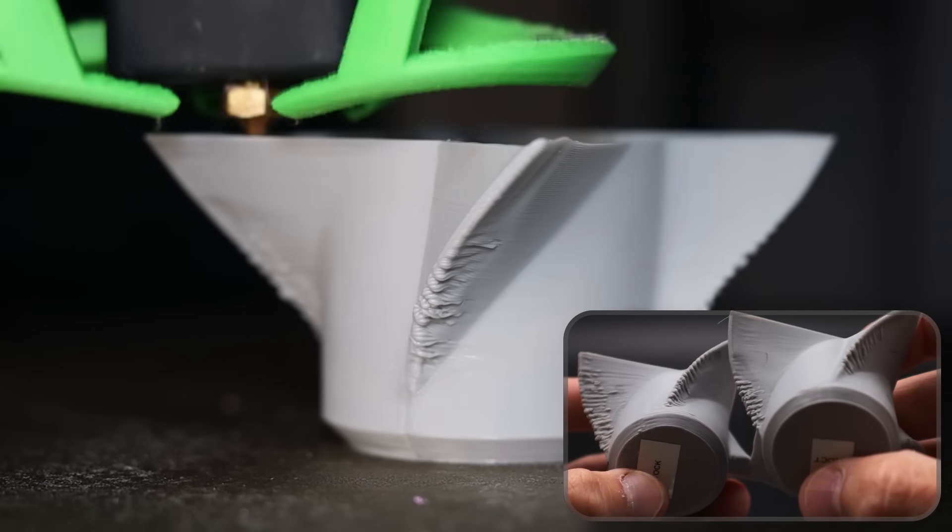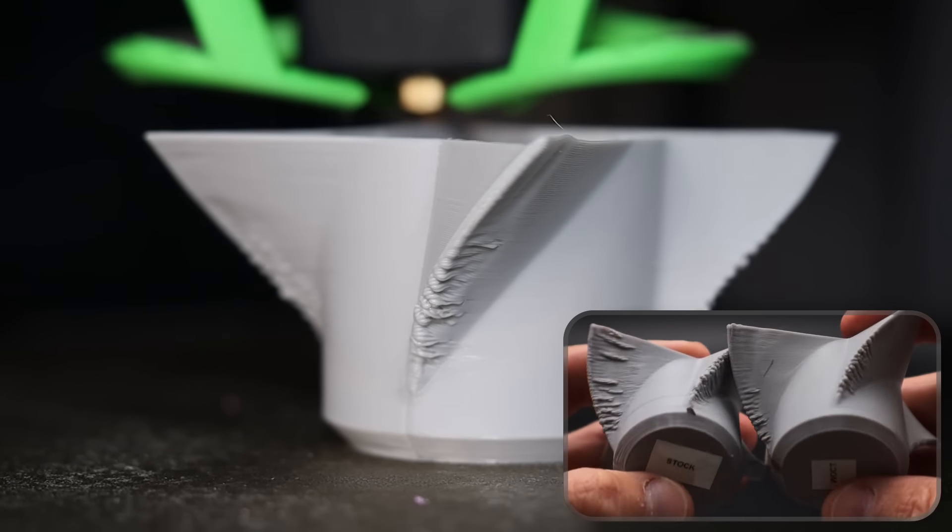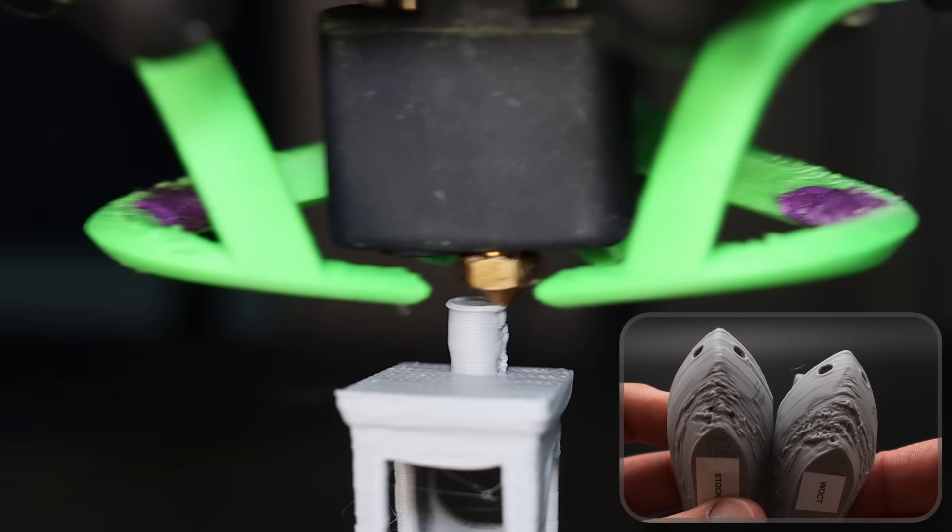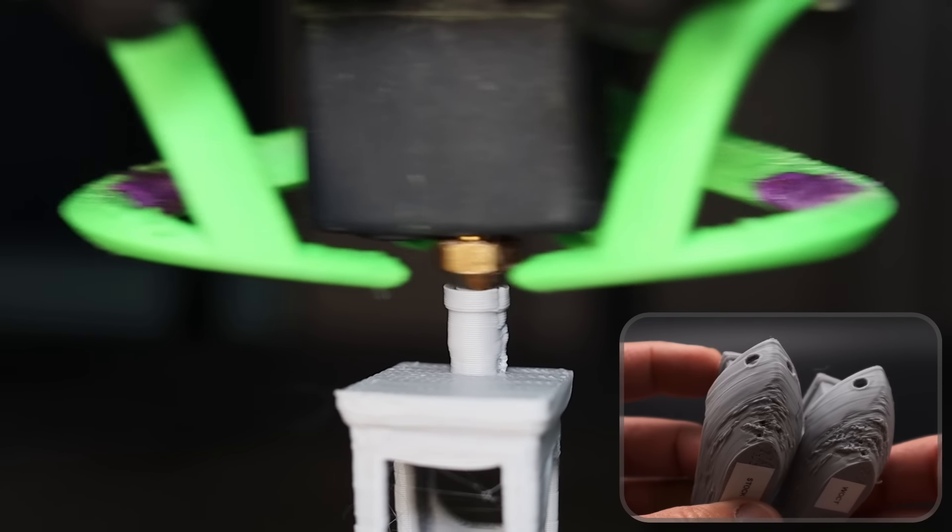For the shuriken, this one was overall quite a bit better than the stock duct with a better shaft and better sides as well. For the benchy, it came in just slightly better than the stock duct. The chimney and the hull were better, the bridges were about the same.